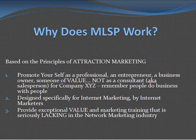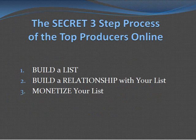The secret three-step process of top producers online: they all build a list — a network of people that they know, that like, and trust them. They build a relationship with those people. Then they monetize their list to find out who wants to work with them directly and build their business long-term in the right way.